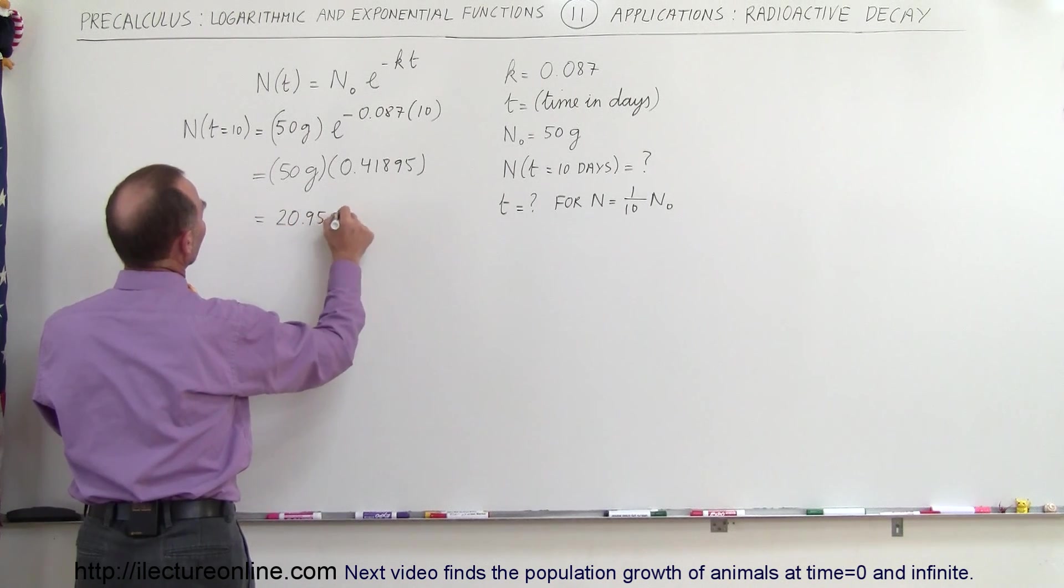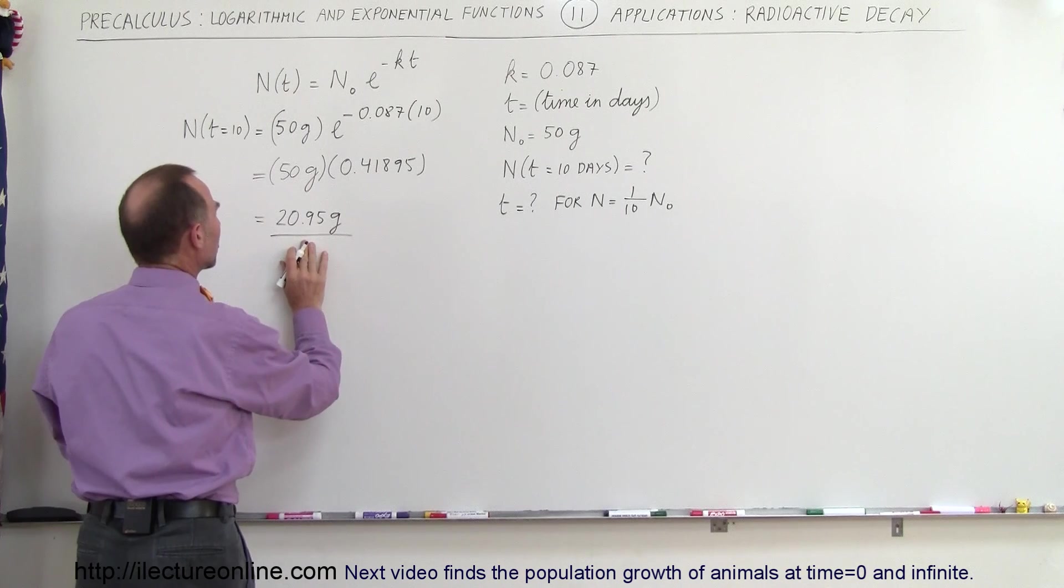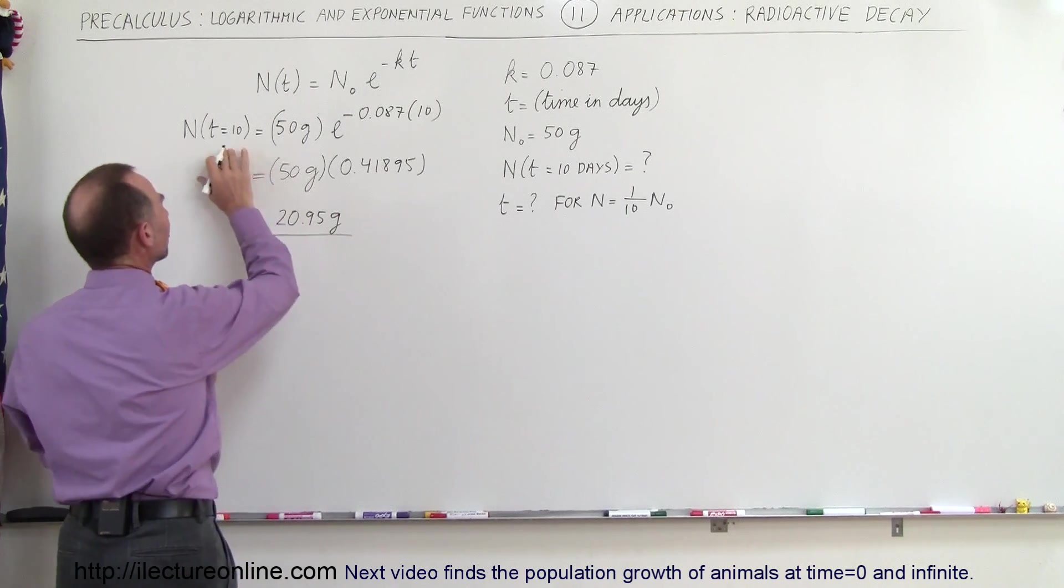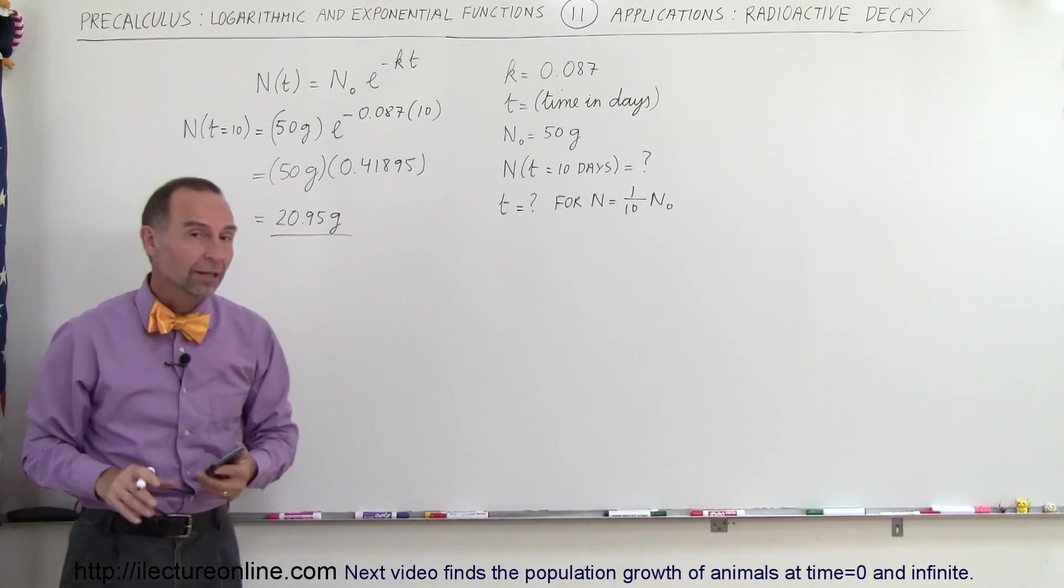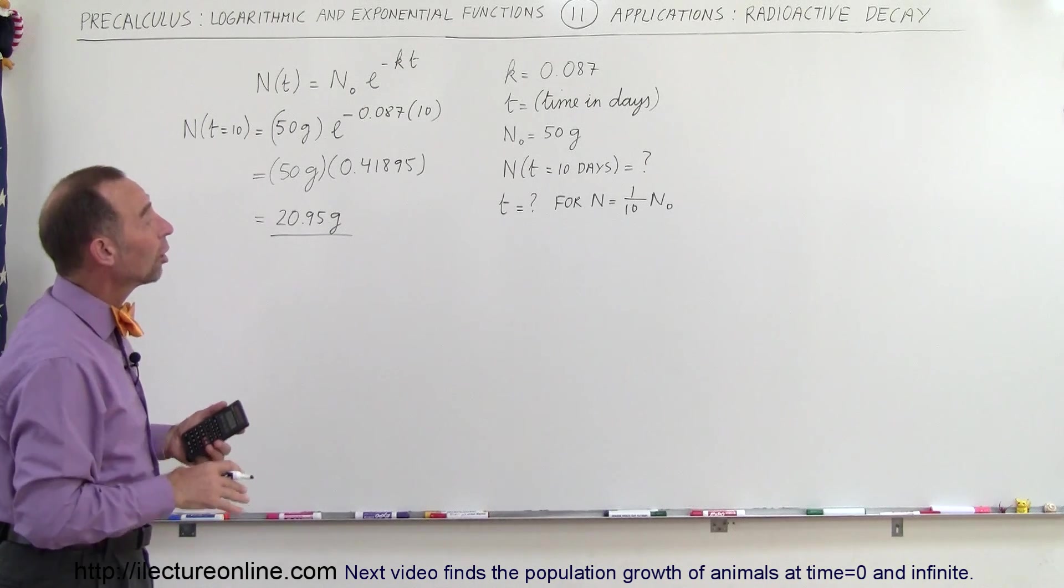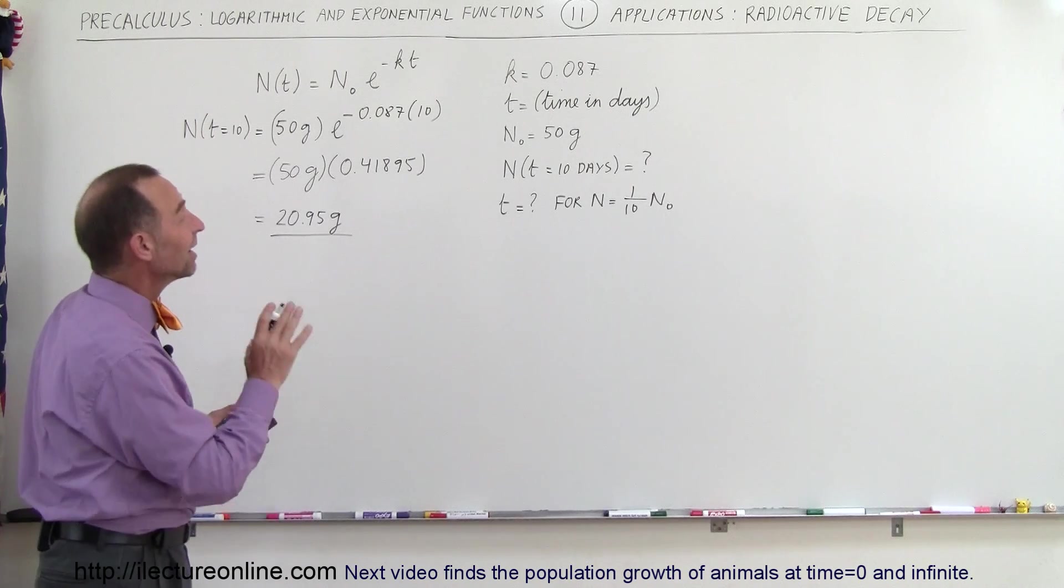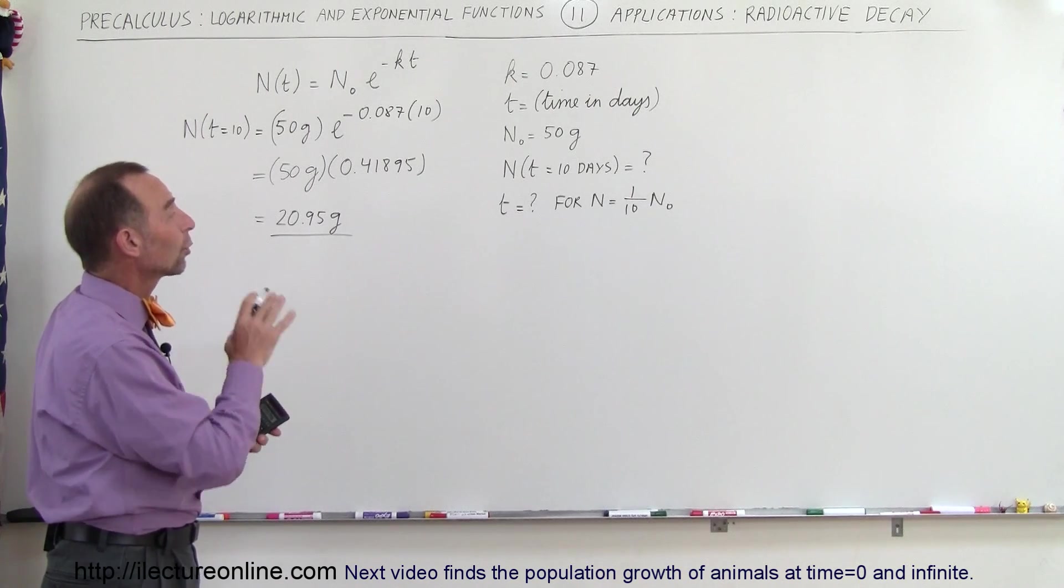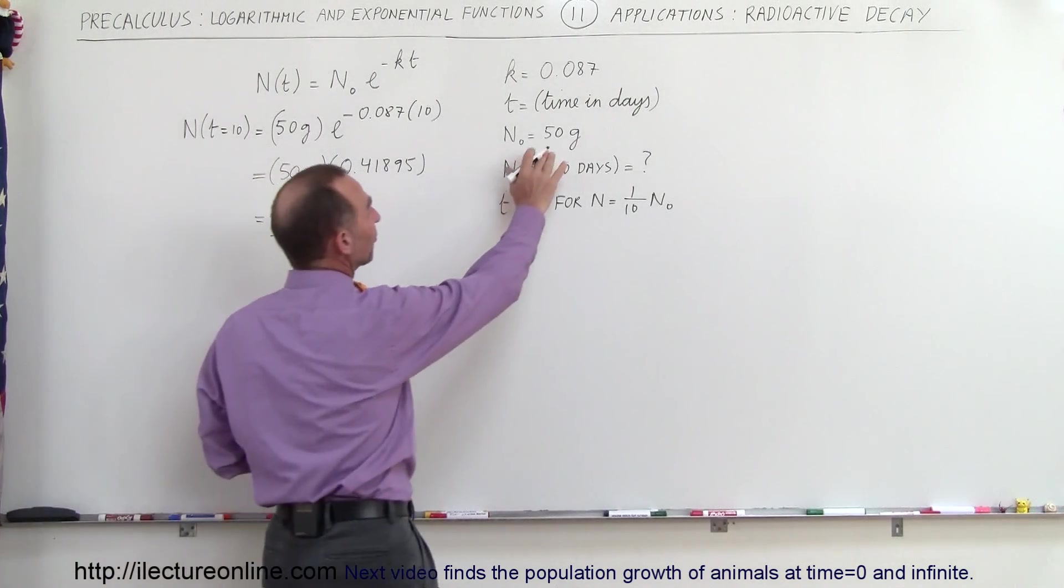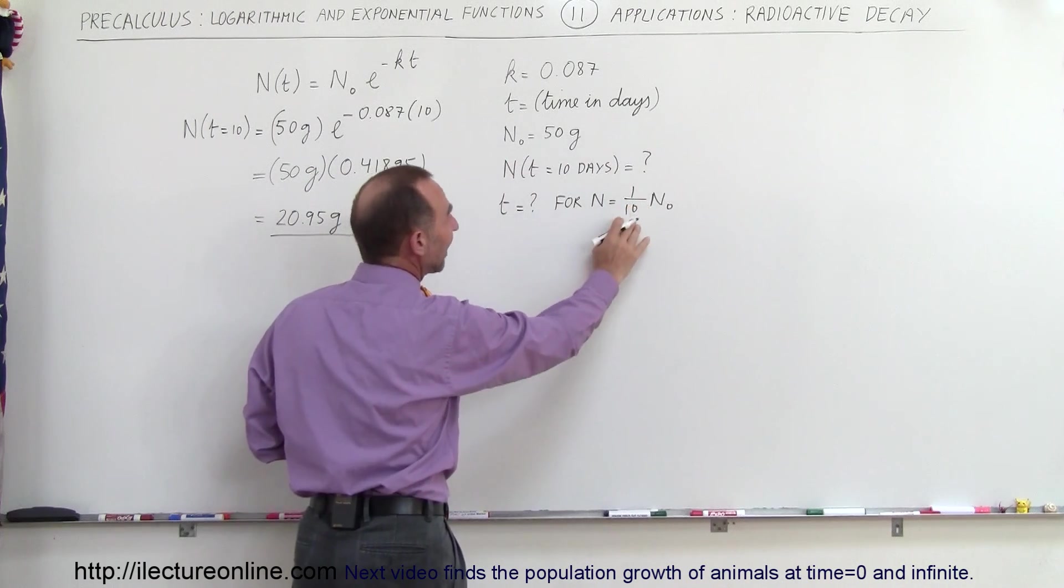20.95 grams is the amount of the radioactive material you will have left after 10 days have elapsed. Now the second part of the question is how much time will it require for the original amount of 50 grams to go down to one tenth of that, so for the amount remaining of the radioactive material to only be 5 grams.